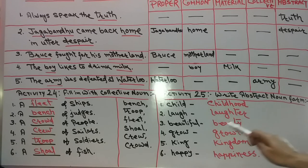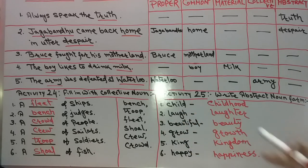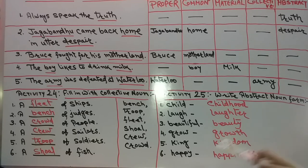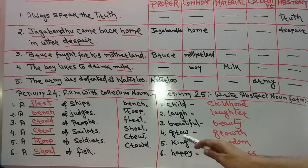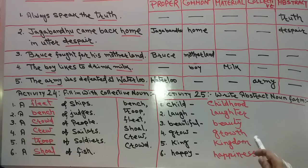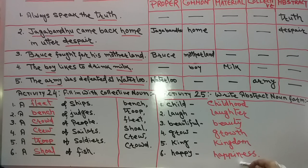Beautiful — abstract noun is beauty. For example, the beauty of Kashmir means shondorjo. Number 4: Grow — abstract noun is growth. King — abstract noun is kingdom. Happy — abstract noun is happiness.